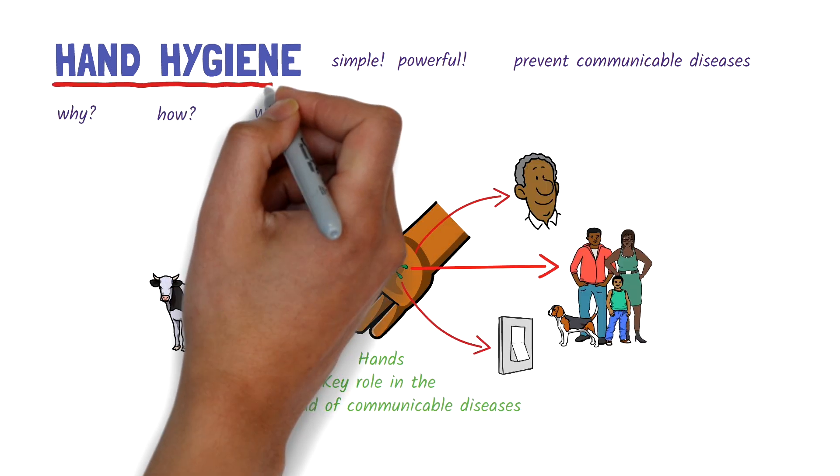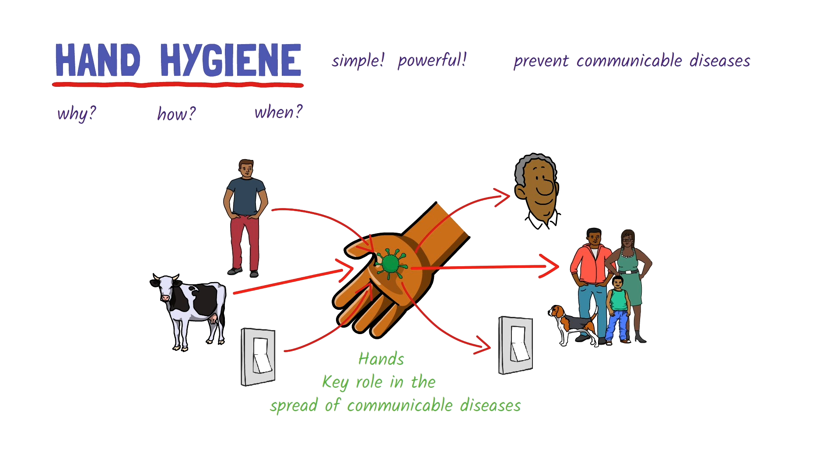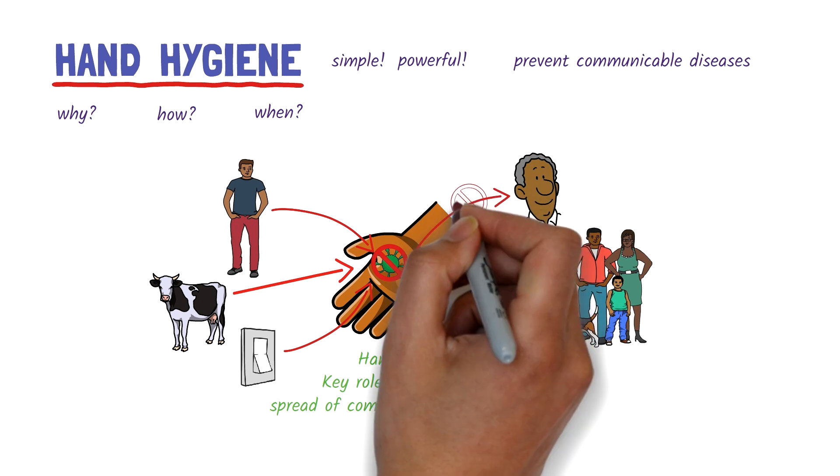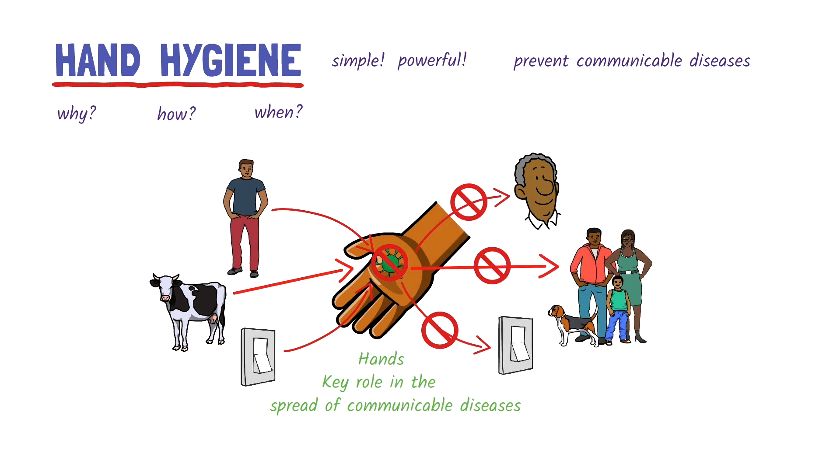That's where hand hygiene comes in. It includes any action that cleans the hands to remove or inactivate these pathogens. By interrupting this chain of transmission, hand hygiene remains one of the simplest and most effective ways to prevent the spread of communicable diseases.